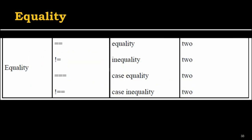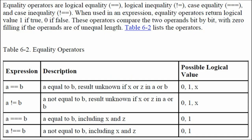Next is the equality operator. Equality has two types: logical equality (==) and logical inequality (!=), and case equality (===) and case inequality (!==). All equality operators take two operands.